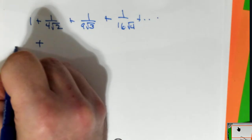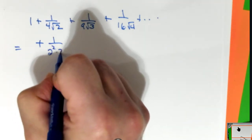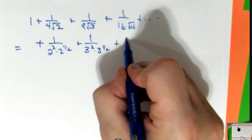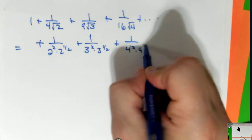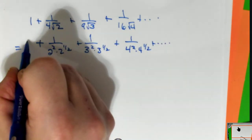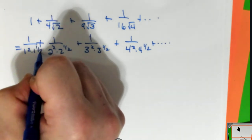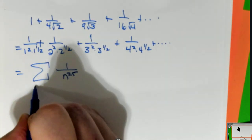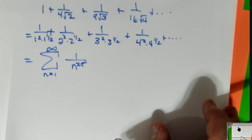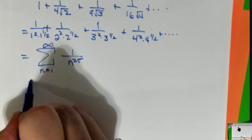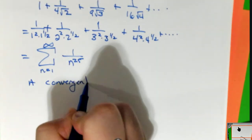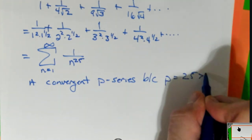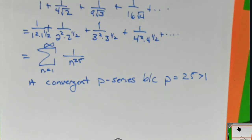Well, let me think about this. Is this one over two squared times two to the one half plus one over three squared times three to the one half plus one over four squared times four to the one half. This is one over n to the two point five, n goes from one to infinity. This is a convergent P series because my power is two and a half, which is bigger than one.